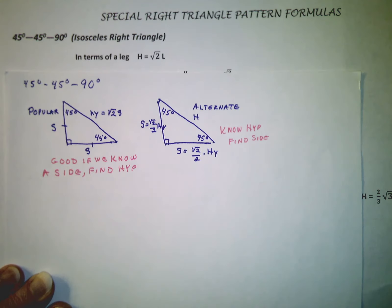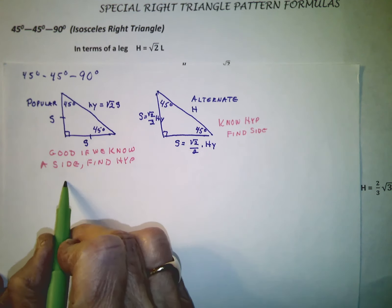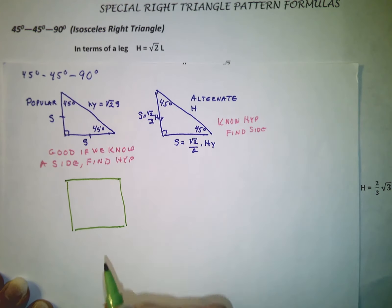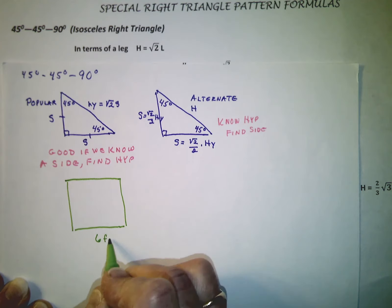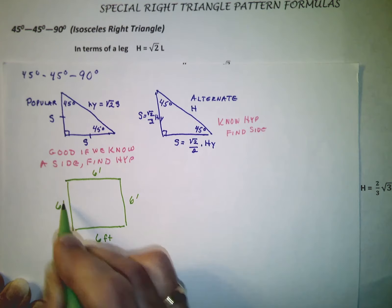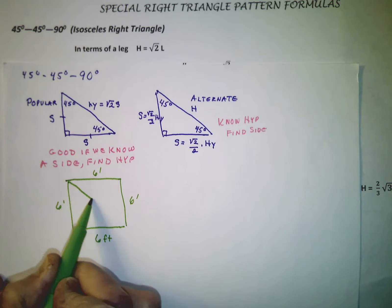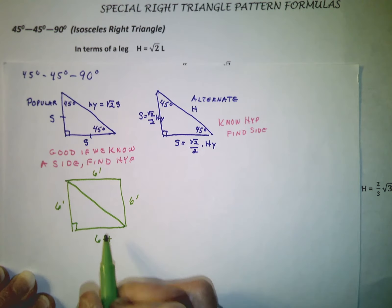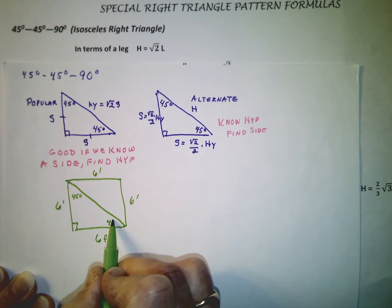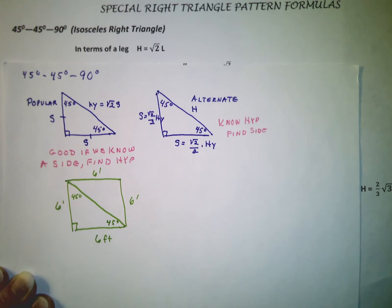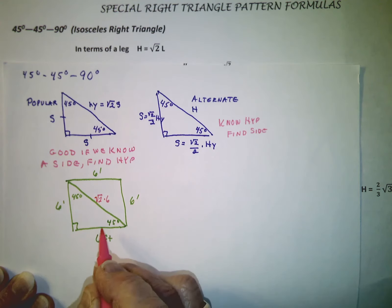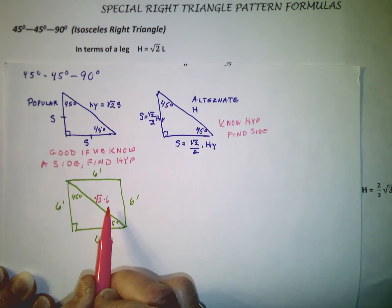For example, we have a square that is six feet on each side, and we want to find out how long the diagonal is. We could use the Pythagorean theorem, or we could use the special 45-45-90 formula. This tells us that the hypotenuse is going to equal the square root of two times six. That's not always practical, but it is the most exact answer: six times the square root of two.